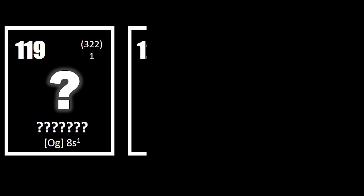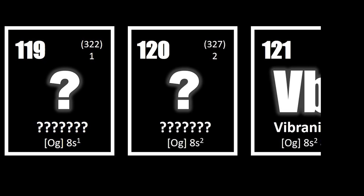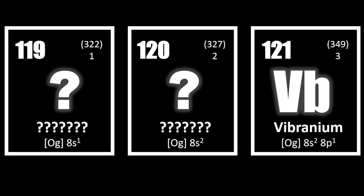With the F block of the periodic table already being filled, Vibranium would obviously have to go into another block on the periodic table, likely the theoretical G block. I imagine that Vibranium would be the third element in an entirely new row on the periodic table, placing it in the G block, thus making it element number 121.